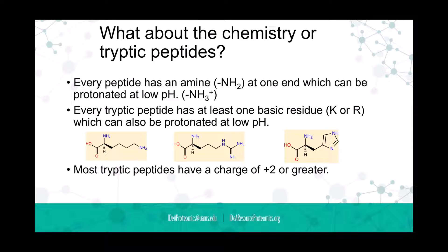What's so important about the chemistry of tryptic peptides? We can exploit the fact that every one of our peptides is going to have an arginine or lysine on it. Every peptide has an amine end on one end which can be protonated at low pH to have a charge, so now it's an NH3+ or ammonium ion. Then every tryptic peptide has at least one basic residue, either lysine or arginine, at the C-terminal, which can also be protonated at low pH.